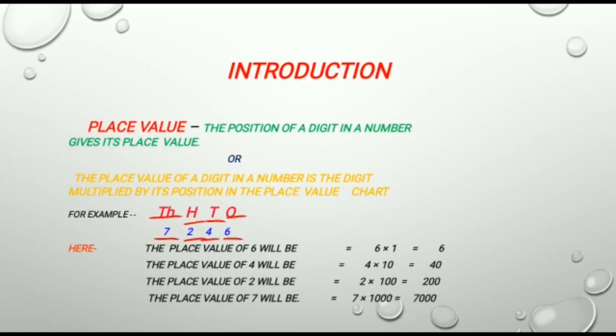This means 7246. Now if I ask you what is the place value of a digit in this number, you see the place value chart and you can tell the place value of each digit. Here the place value of 6 will be 6 multiplied by 1 is equal to 6.